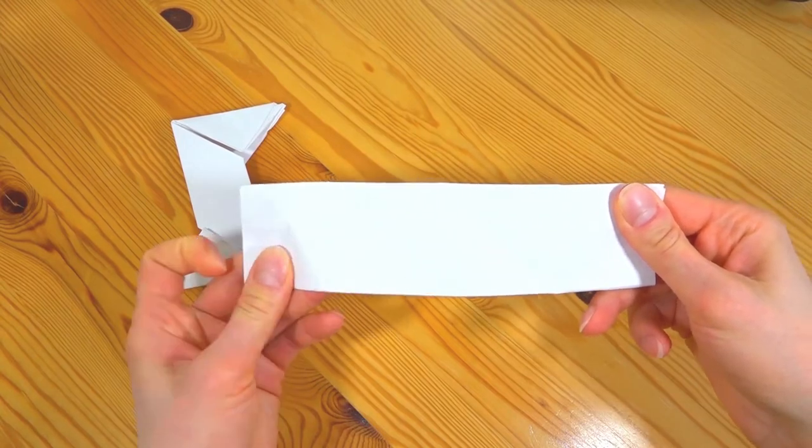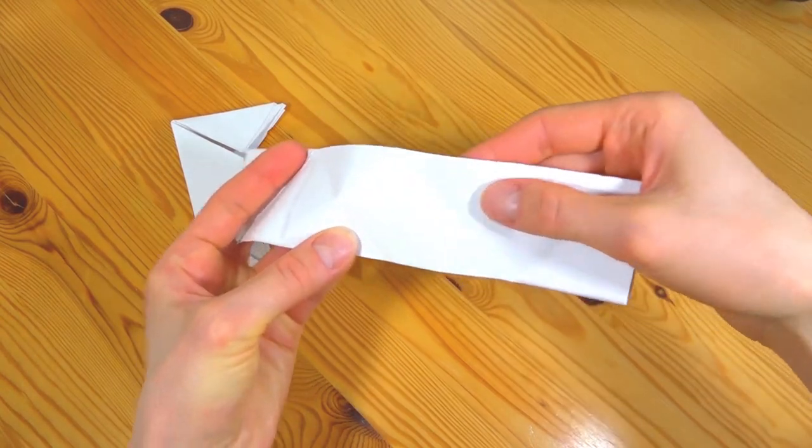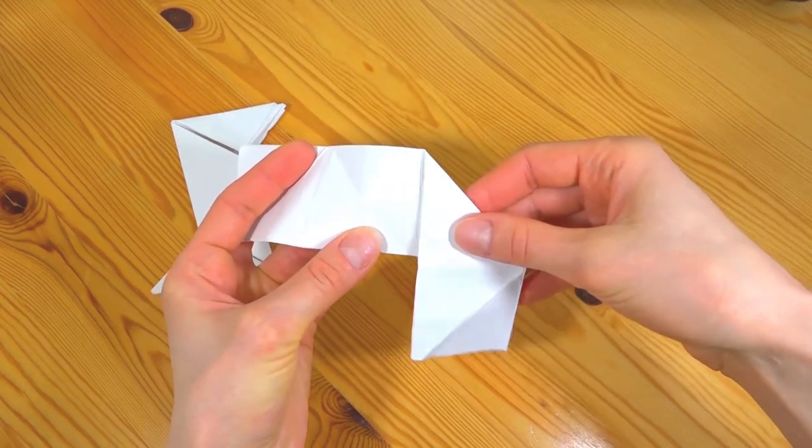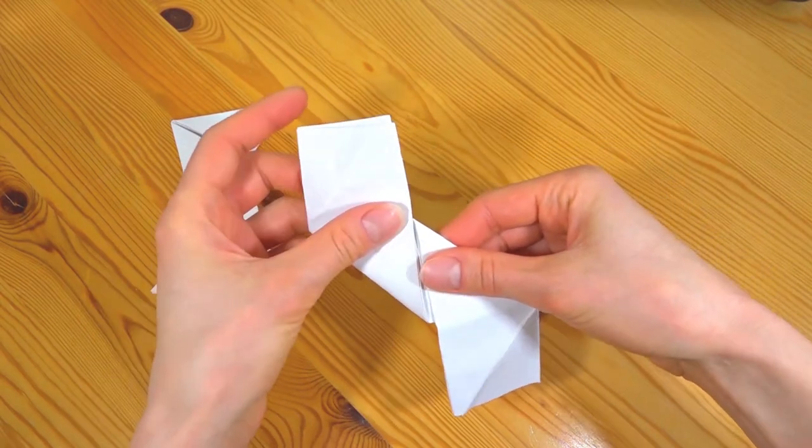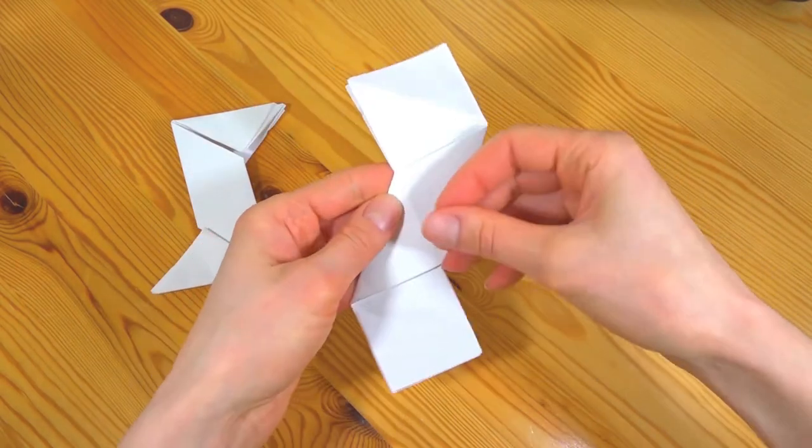From the second sheet of paper we do the same. We fold this line down and from the other side up. Turn it over, fold it like this and here like that.